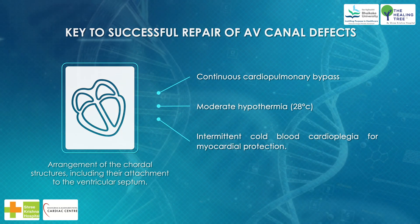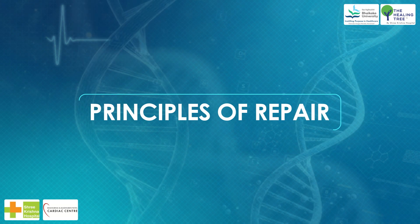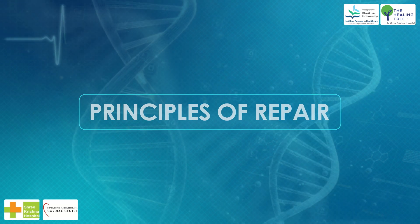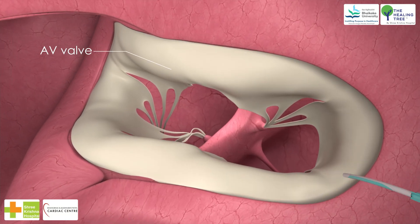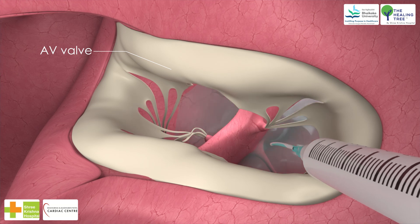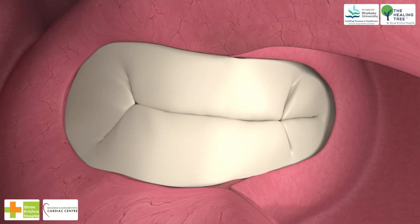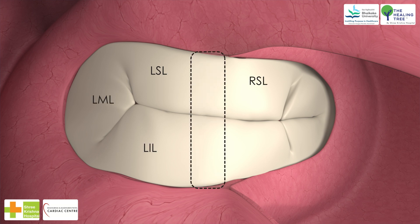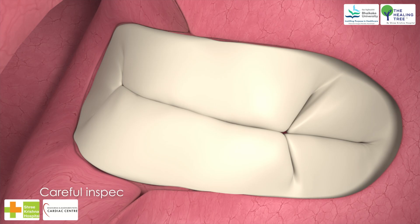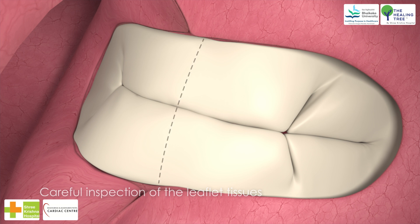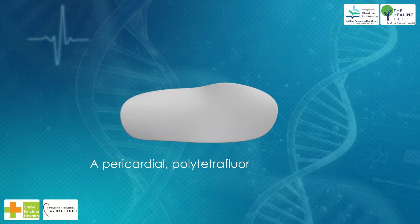The procedure is performed using continuous cardiopulmonary bypass, moderate hypothermia at 28 degrees Celsius, and intermittent cold blood cardioplegia for myocardial protection. Principles of repair: (1) the ventricular chambers should be gently filled with cold saline to float the AV valve leaflets to their closed position; (2) floating the valve leaflets with saline helps identify the line of apposition between the anterior and posterior common leaflets; (3) careful inspection of the leaflet tissues identifies the line dividing the valves into right and left components.